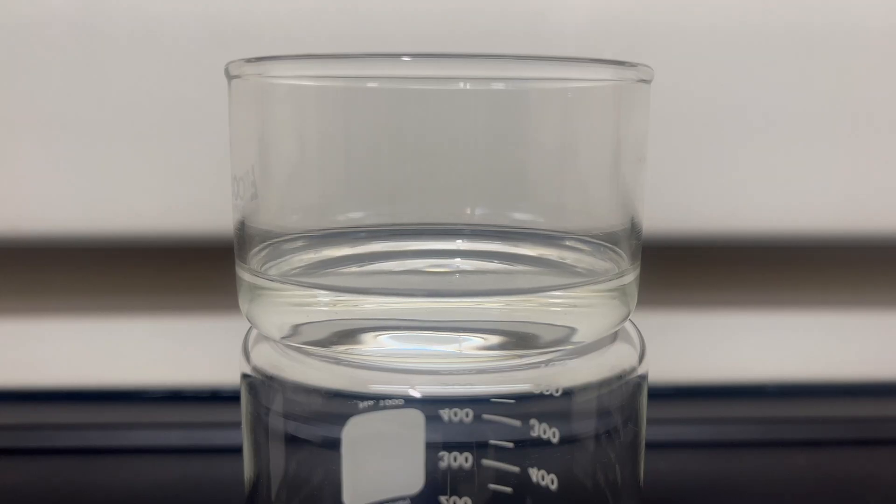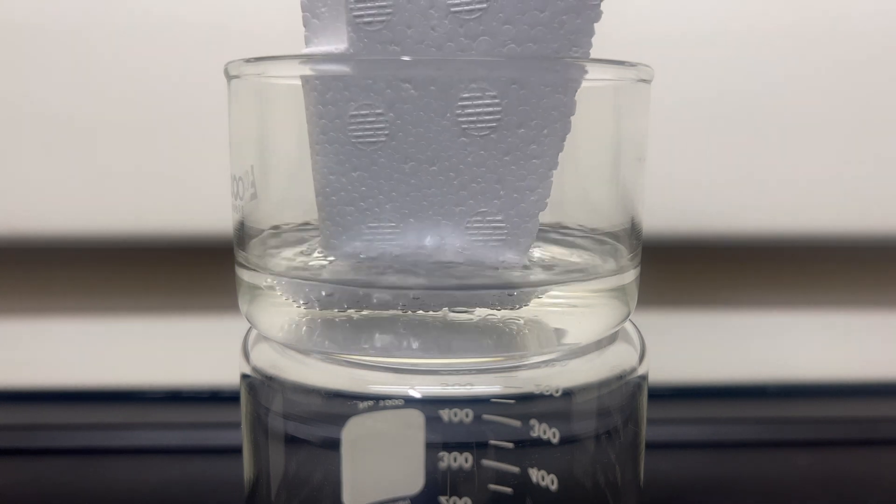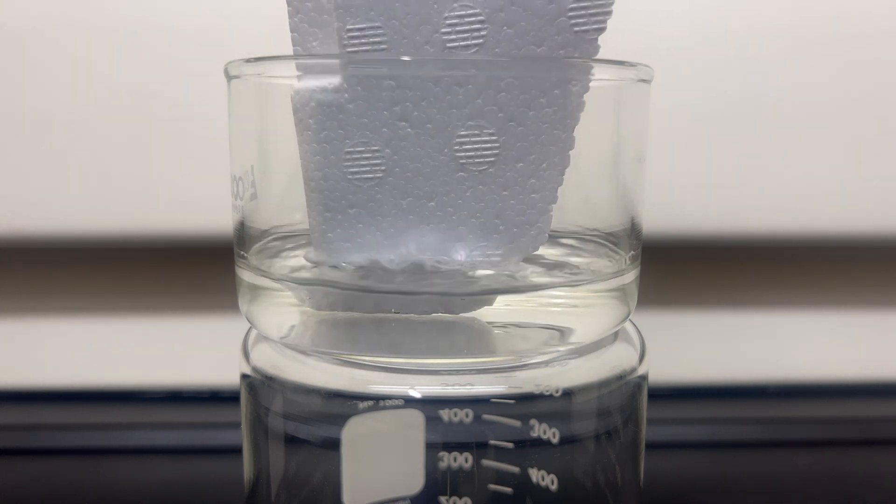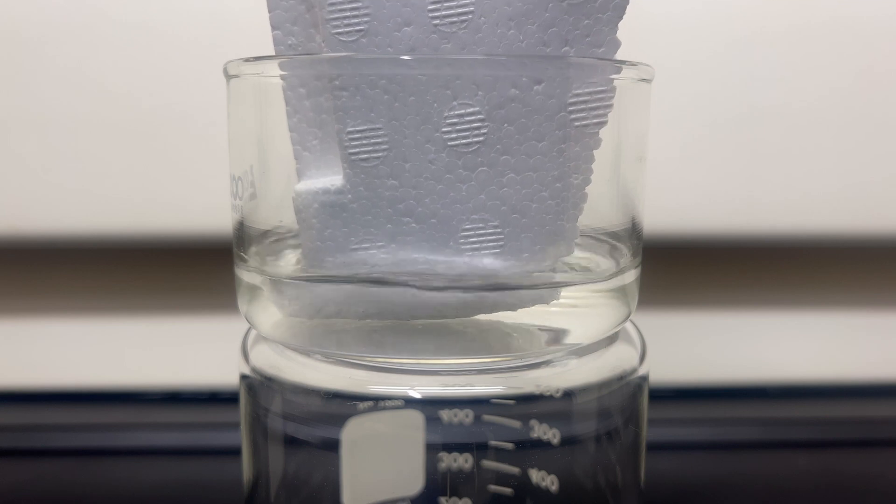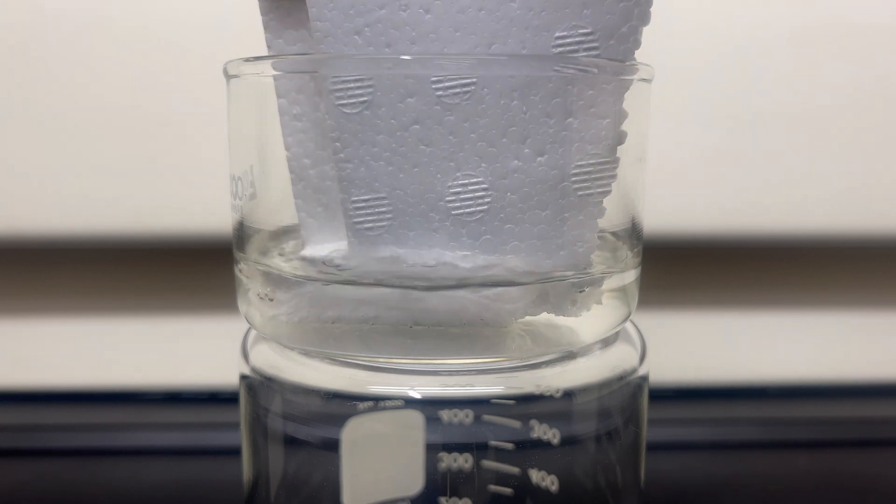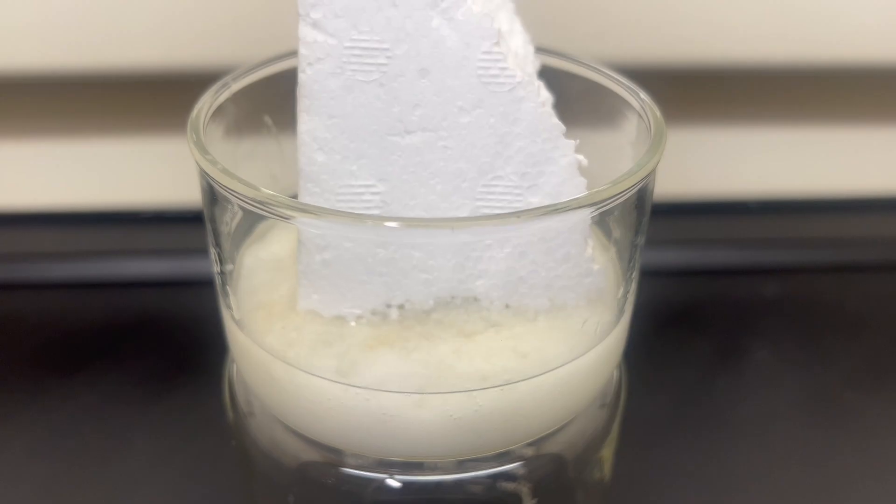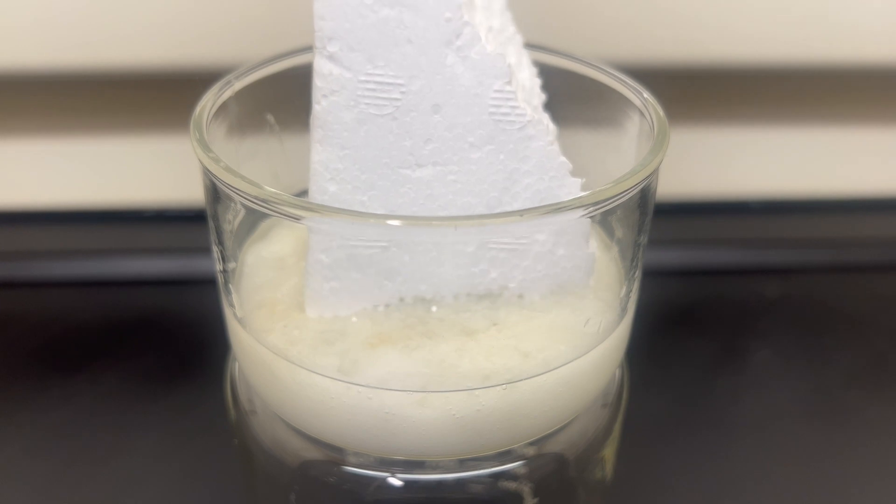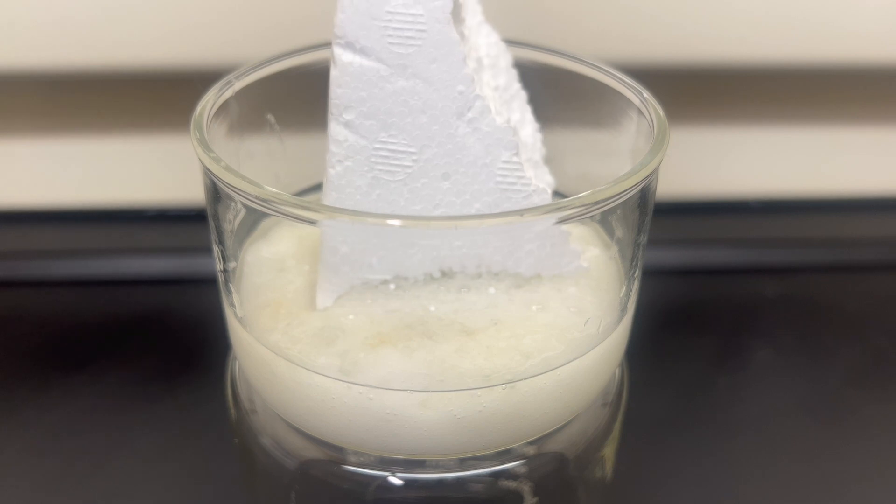First things first, polystyrene is generally found in its expanded form, whipped full of air, making it super light and giving it nice insulative properties. But this is not practical for filling up a reactor. By using a solvent such as acetone or a similar hydrocarbon, one can dissolve polystyrene into a goop, releasing all the trapped air.